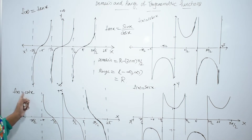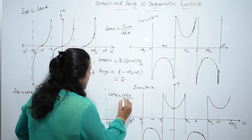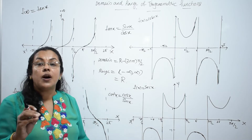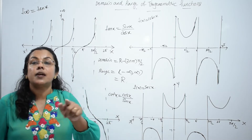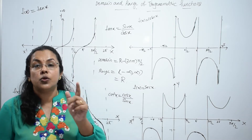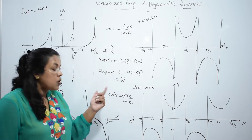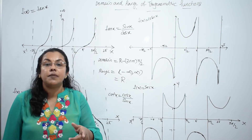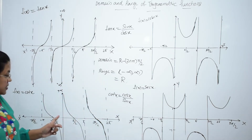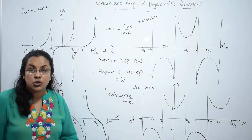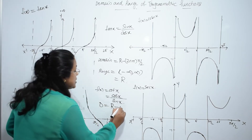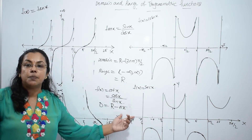Now look at cot x. F(x) equals cot x, which is cos x divided by sin x. Cot x is defined for all real numbers except where sin x equals 0. When sin x equals 0, cot x becomes infinity, so we have to avoid those values. Sin x is 0 at 0, π, 2π, 3π and so on — multiples of π. Therefore, the domain of cot x is the set of real numbers except multiples of π.